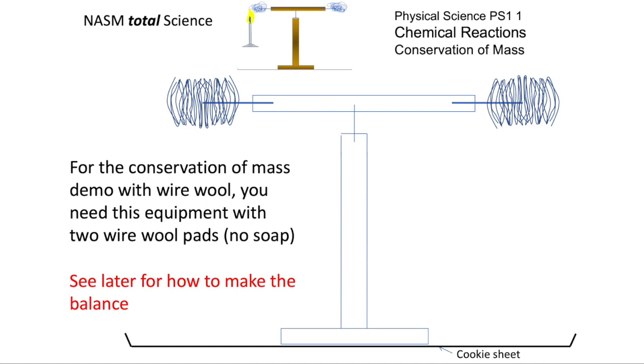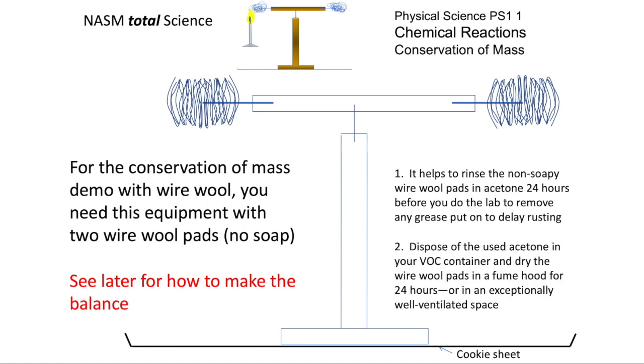And you're going to use wire wool pads that don't have soap on them, often the ones that are used for smoothing furniture if you're making it or renovating it. You'll get instructions for the balance. Here, rinse non-soapy wire wool pads in acetone, but dispose of the used acetone in your volatile organic chemical container and allow the pads to dry for 24 hours in a fume hood.